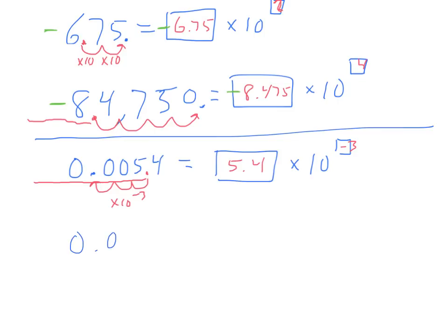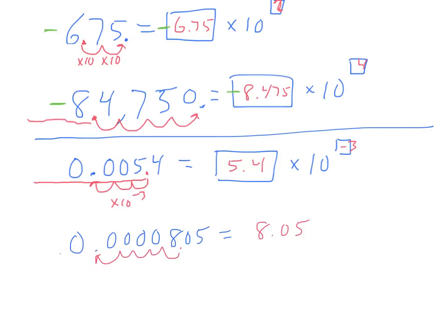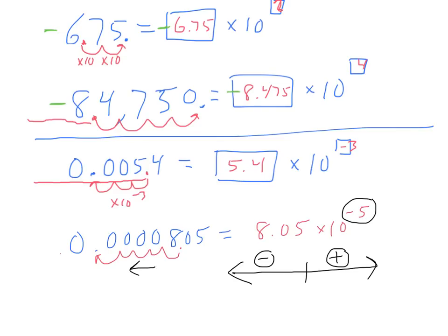Let's do one more: 0.0000805. So we're going along until right there — I'm drawing this just so you can see my thinking; you don't actually have to draw that red line. We're going to have 8.05. Then we're going to be dividing by 10 five times — 1, 2, 3, 4, 5. So that means times 10 to the negative 5. It's kind of like the same thing we saw earlier when we were going the other way: we can associate moving to the left as being negative, to the right as being positive, like the number line. When we're moving the decimal place to the left, it's going to be a negative exponent. When we're moving the decimal place to the right, it's going to be a positive exponent.